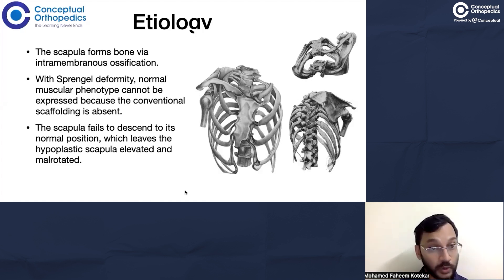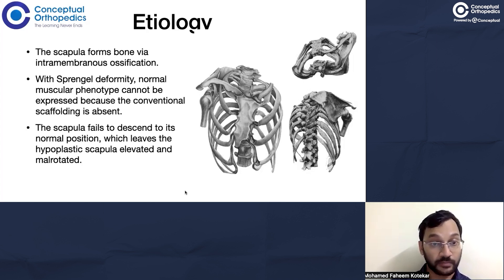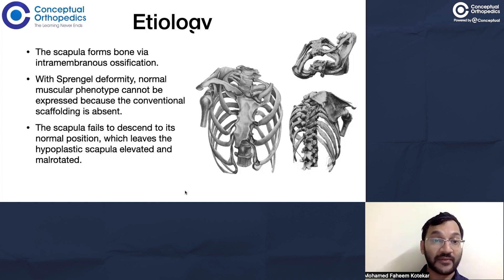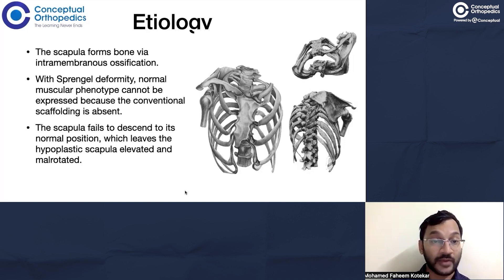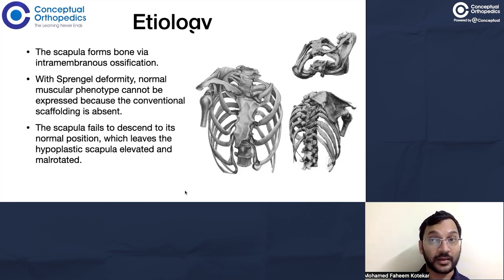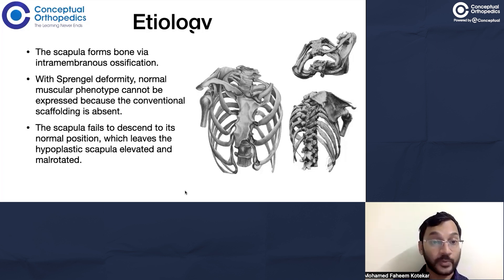The lower end of the scapula sits at the seventh thoracic vertebra from an embryological point of view. As a child grows, the scapula ossifies through intramembranous ossification. In Sprengel's deformity, it's not just the hypoplastic and elevated bone but also the musculature around the scapula which is hypoplastic, because the musculature requires a framework - the scapula itself - on which it can attach.